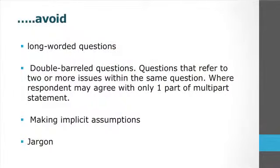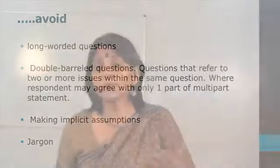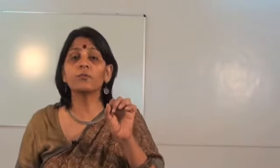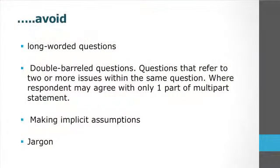Double-barrel questions — questions that refer to two or more issues within the same question — should also be avoided, because the respondent may agree with only one part of a multi-part statement. If they agree only partially, it becomes difficult for them to give a clear yes or no. The problem lies with the question, not the respondent. Similarly, making implicit assumptions should be avoided, and any jargon used in questions should be totally avoided.